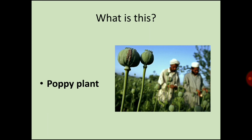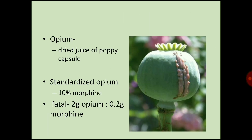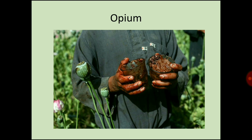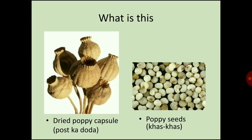The next plant is the poppy plant. Opium is the dried juice of poppy capsule. Standardized opium contains 10% morphine. In fatal cases, 2 grams of opium and 0.2 grams of morphine is enough. You can see opium in this picture. The next is dried poppy capsule, also known as post, card, or doda. Next are poppy seeds, known as khas khas.